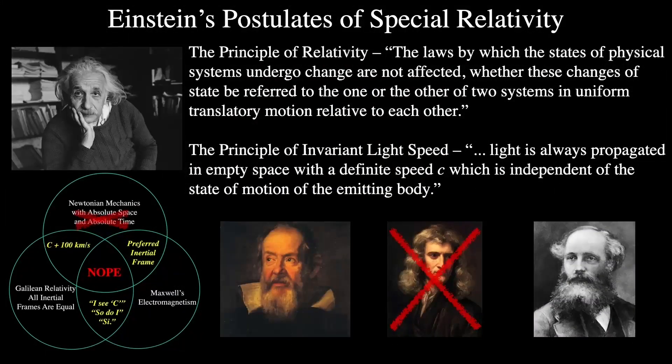In 1905, Einstein cut through the difficulty when he published his paper on the electrodynamics of moving bodies. Einstein looked carefully at all electromagnetic interactions and noted how some effects were measured depended only on the relative motion of the objects in question. In so doing, he revived and extended Galilean relativity.